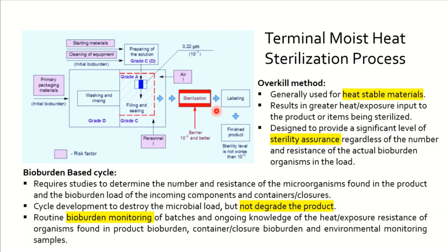If the product is not heat stable and requires less exposure time or minimum temperature to sterilize, we will use the bioburden-based cycle. A bioburden-based cycle requires studying and determining the number and resistance of microorganisms found in the product, and the bioburden load of the incoming material and containers. A cycle is developed to destroy the microbial load without degrading the product. Routine bioburden monitoring is very important because our qualification is based on bioburden. Product bioburden, container closure bioburden, and environmental monitoring are all important aspects of this monitoring.